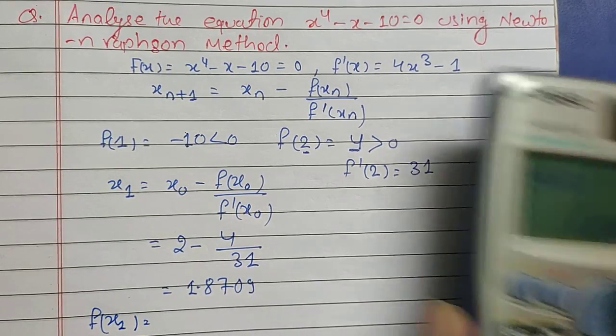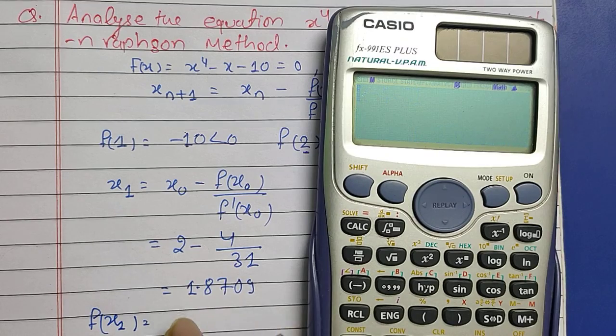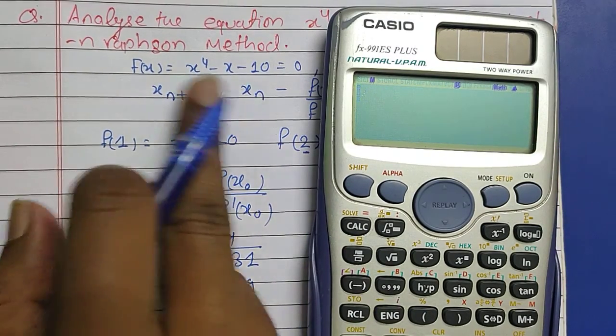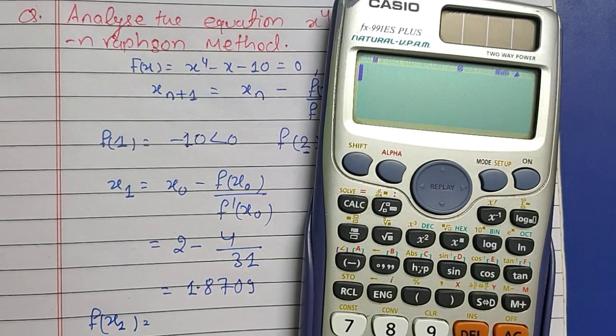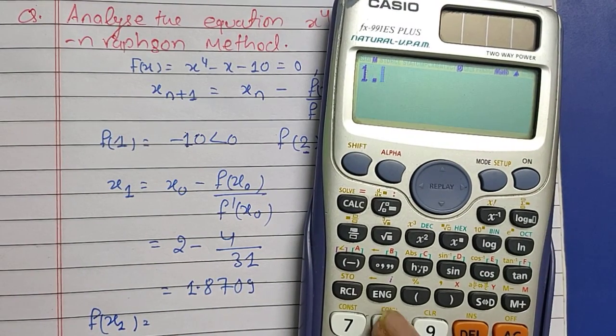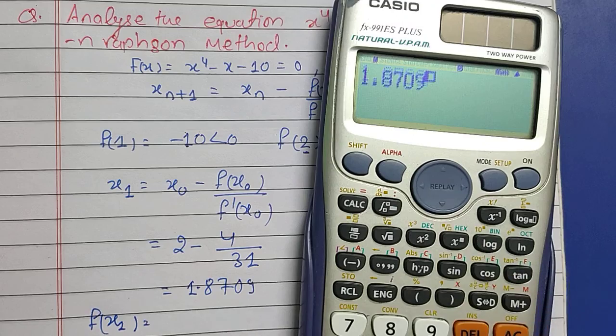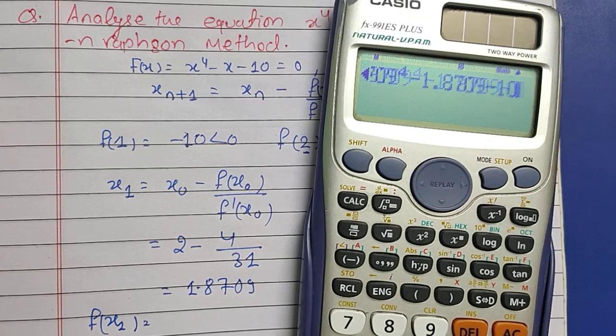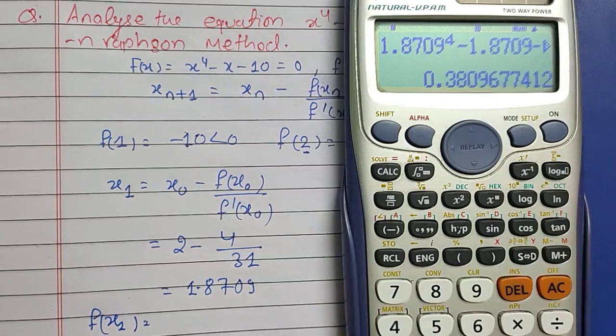Now find f(x_1). For finding f(x_1), we have to put x replaced by 1.8709 in this equation. Then doing so, what we will have is 1.8709^4 - 1.8709 - 10, and this is going to be 0.3809.